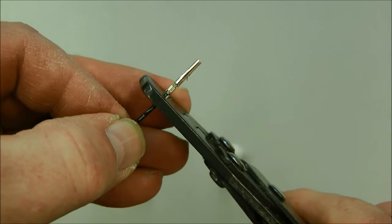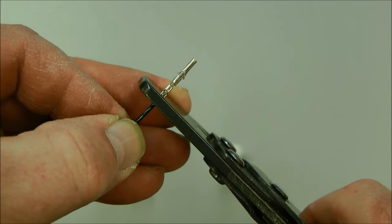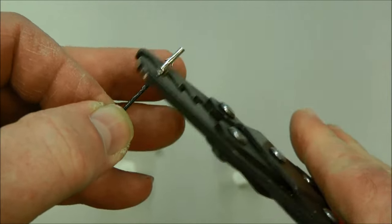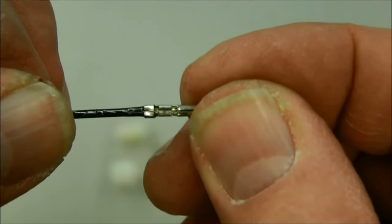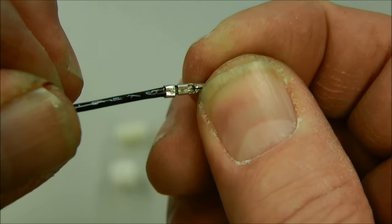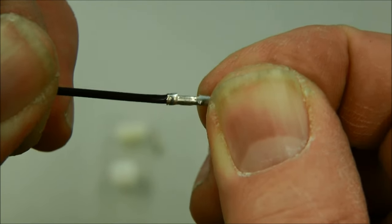And generally use a size larger saw. And there we crimp that down. And you can see that has secured the insulation very nicely.